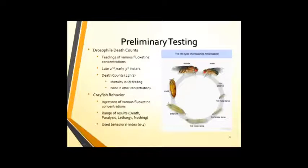I'm going to go over some preliminary testing that we did before getting into the actual methods of this study. First, to get some baseline readings of what Prozac will do to Drosophila and crayfish behavior and neuromuscular junctions, we did Drosophila death counts and looked at crayfish injections. With the Drosophila death counts, we fed five to ten larva various fluoxetine concentrations for about 24 hours. We were using late 2nd and early 3rd instars, which I'm highlighting with the mouse. The reason for this is that at this point in their life cycle, they're eating a lot, but they're not ready to pupate within the 24-hour period that we're studying them for.